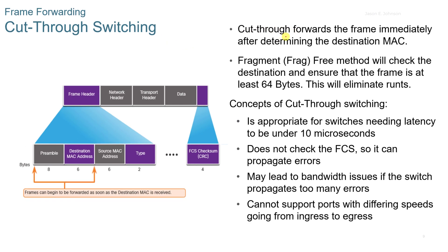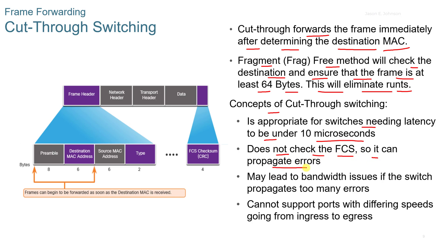Cut-through switching forwards the frame immediately after determining the destination MAC address. The fragment-free method checks the destination and ensures the frame is at least 64 bytes, eliminating runts. Cut-through switching is appropriate when latency needs to be under 10 microseconds. However, it does not check the FCS so it can propagate errors, may cause bandwidth issues if too many errors are propagated, and cannot support ports with differing speeds between ingress and egress.